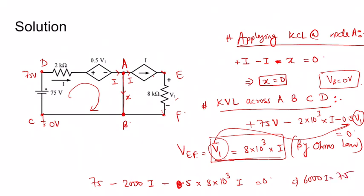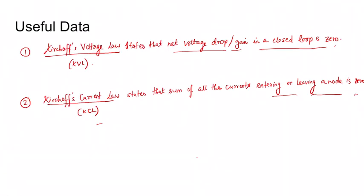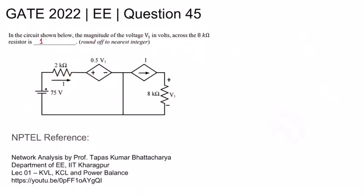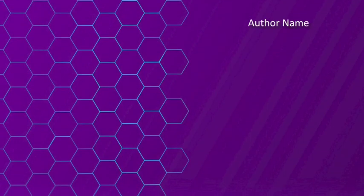So i is 75 by 6000. Therefore V1 is 8 into 10 to the power 3 into 75 by 6000, which equals 3 into 75 by... So the answer is 100 volts.